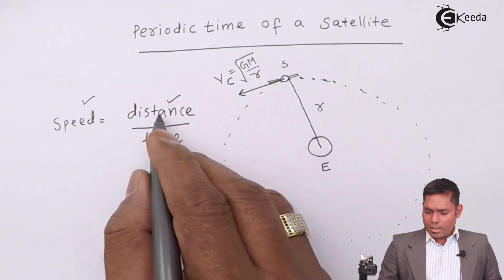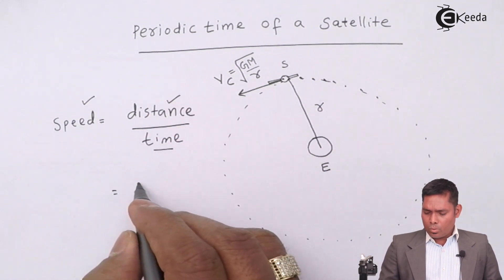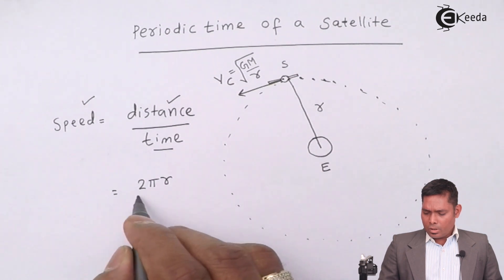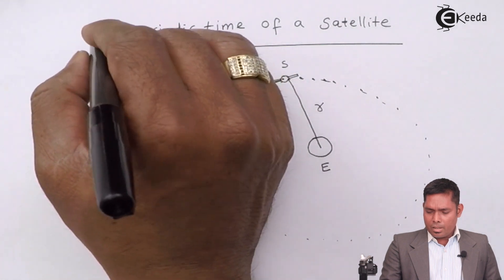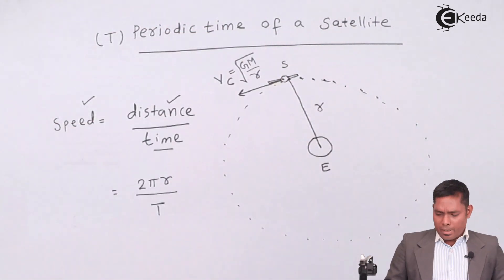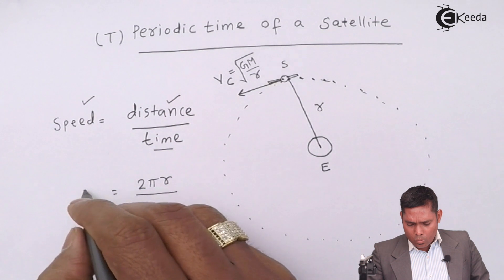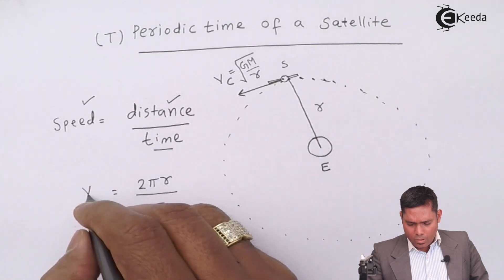So when the distance is exactly equal to 2 pi r, the time is called time period capital T. The capital T is standing for the periodic time and the speed is also known, which is vc.